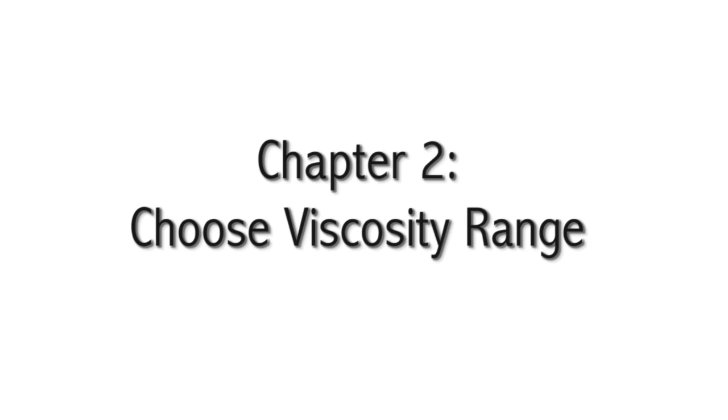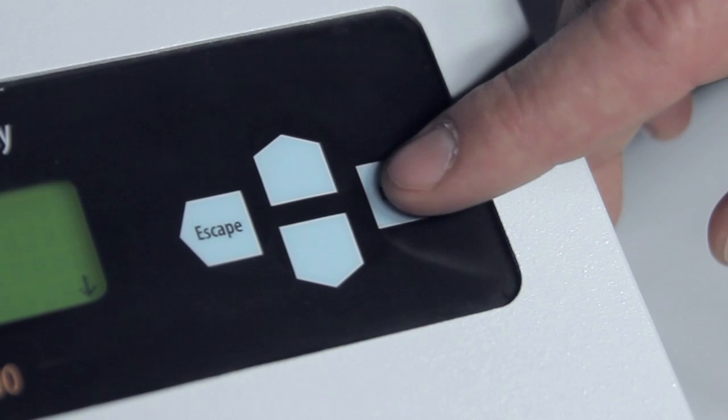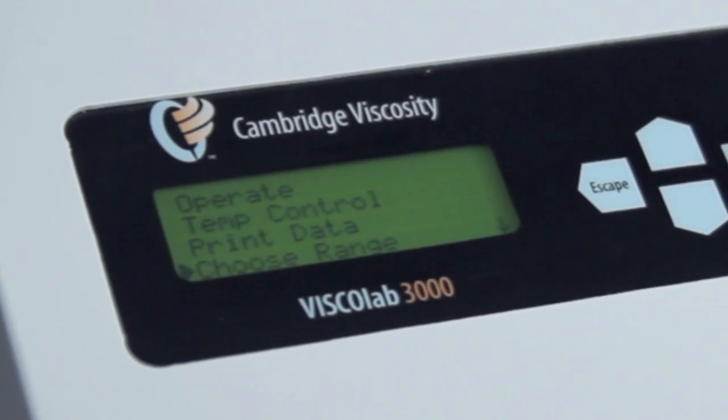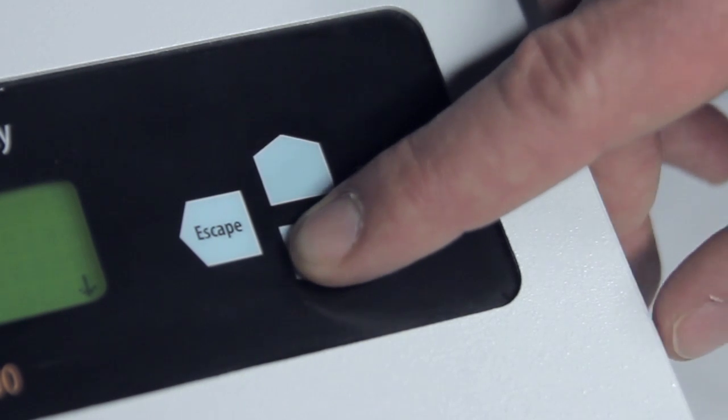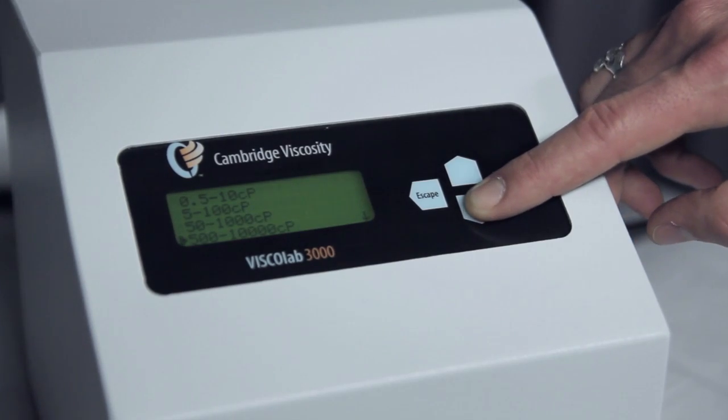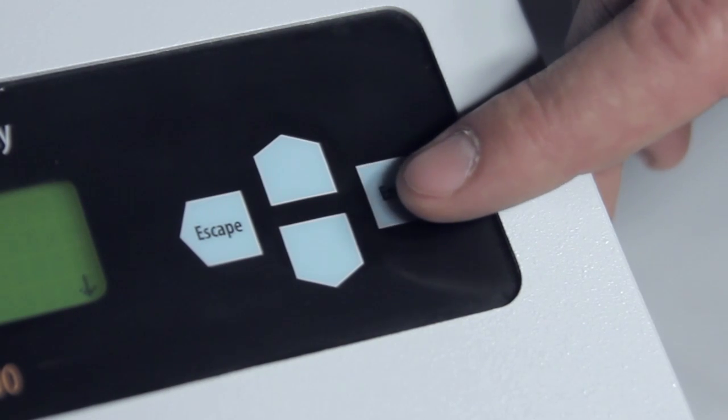Chapter 2: Choose a Viscosity Range. From the main menu, push the down arrow three times. Press enter on choose range. Use the up and down arrows to select the desired viscosity range that correlates to your piston range. Press enter once the desired range is chosen.